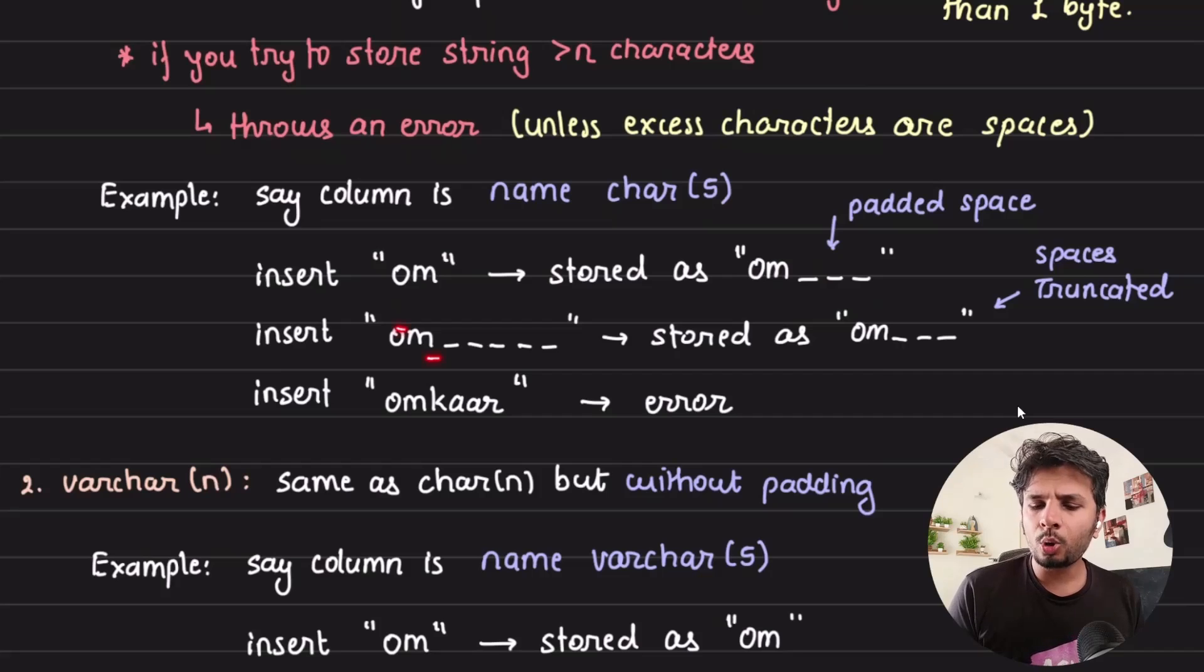If I try to insert "om" followed by excess spaces, the database truncates the spaces and maintains the width. If we try to insert a string with length more than 5, it throws an error. For example, trying to insert "omkar" of length 6 throws an error.